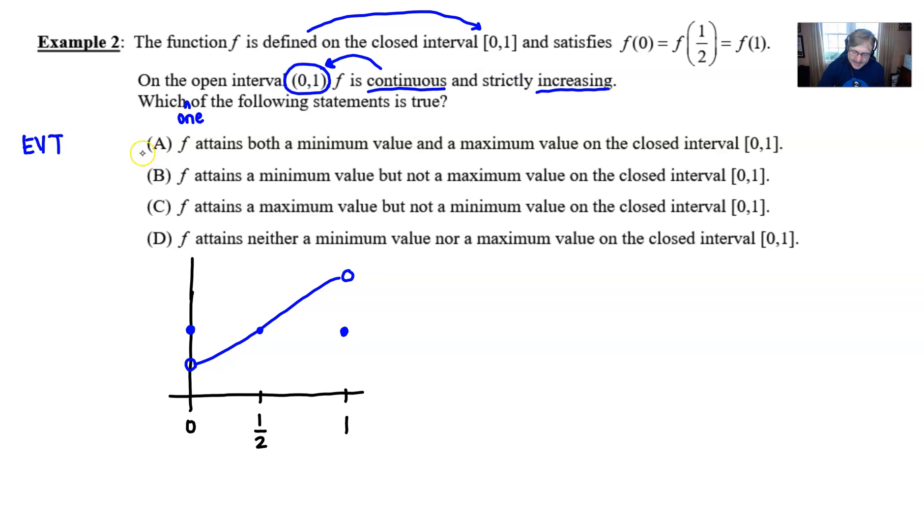And so essentially, we can refute part B, because f doesn't have to contain a min but not a max. And f doesn't have to contain a max but not a min. So all three of these look like they are refuted, which means D better be true. And that says that f attains neither a minimum nor a maximum value. And that indeed is what's happening with problem number two.